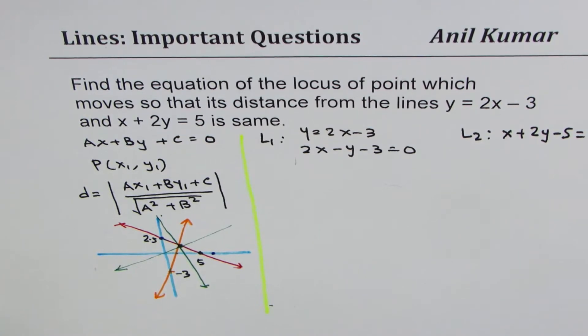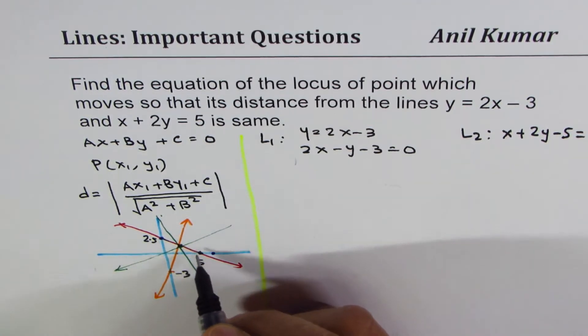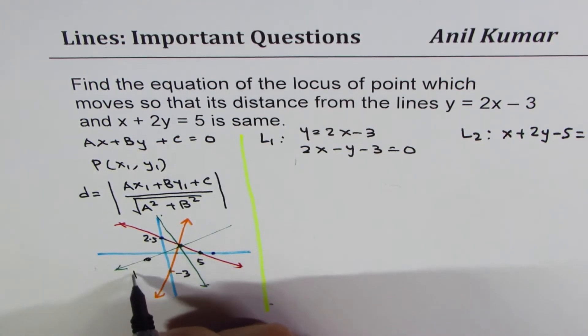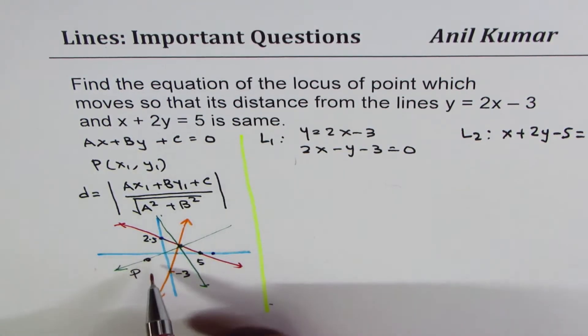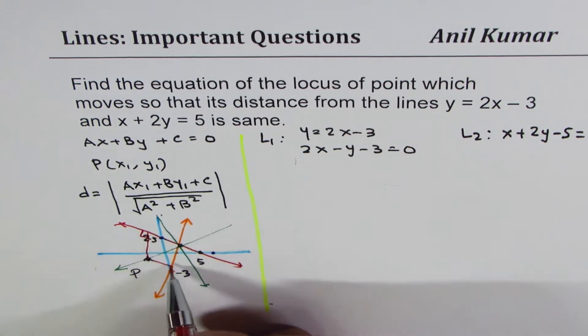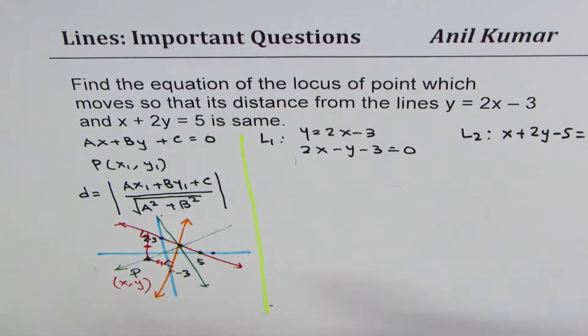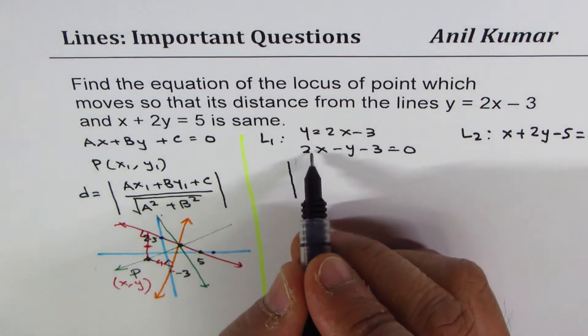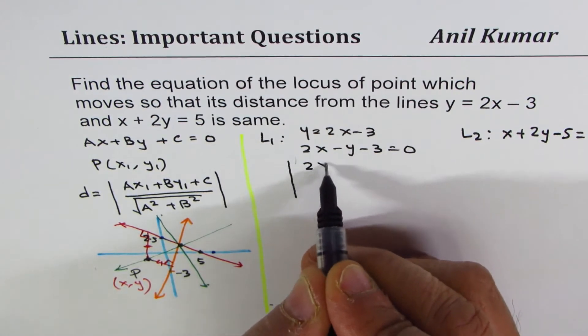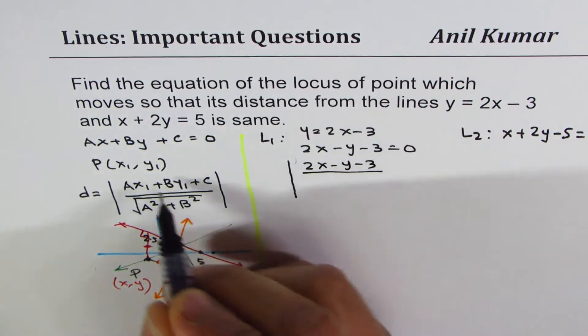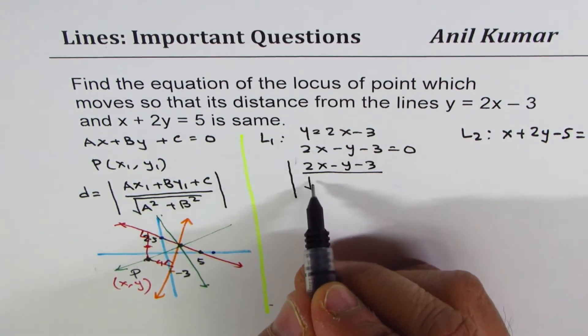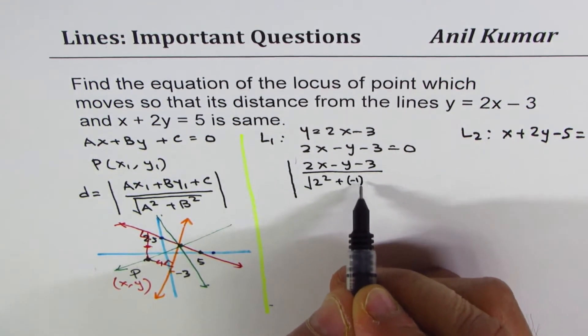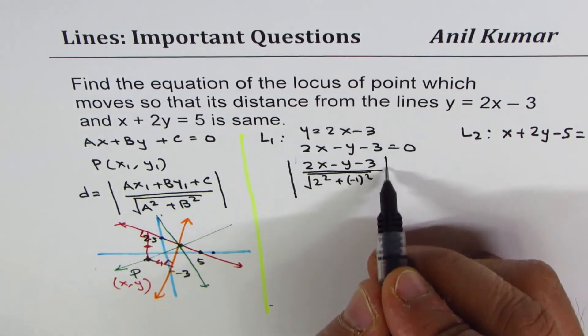Let's assume there is a point here, P. This point is same distance away from both. That means these two distances are equal. Let's say the coordinates are x, y for the point. If the coordinates are x, y, then the distance from this line will be x, y are the coordinates. In this equation we will substitute x, y. So it remains kind of same. That's the formula, right? Square root of a square, which is 2 square, plus minus 1 square, square root, absolute value equals to...